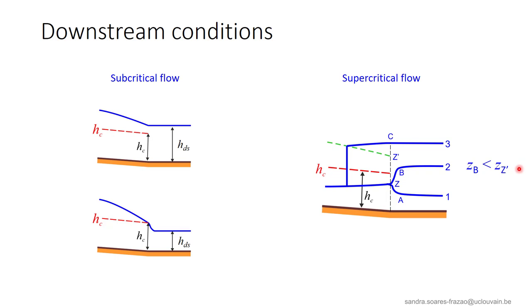In situation number 2, Z' is above point B, so here Z' above point B, that corresponds to the downstream water level. So the hydraulic jump is pushed back in the reservoir and does not appear in the channel.